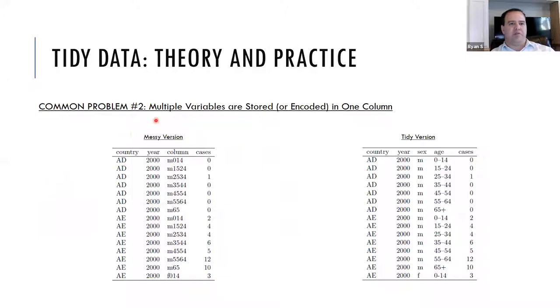So common problem number two is that multiple variables are stored or encoded in one column. So under this messy version, there's a country, there's a year, and then in this column, which is properly named column, you can see that there's a letter followed by a series of numbers. And when you're familiar with the data set, you would know that the letter is going to be either an M or an F for the gender of the person or people being observed. And then these numbers refer to their ages, so 0 to 14 means ages 0 to 14. And that's what's shown over here under the tidy version, where this column is broken out into sex, M and F, and then age brackets as listed there.